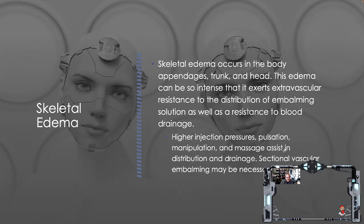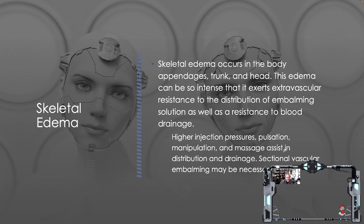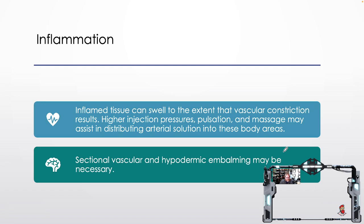Skeletal edema occurs in the body appendages, trunk, and head. This edema can be so intense that it exerts extravascular resistance to both the distribution of embalming solution and blood drainage. Higher injection pressures, pulsation, manipulation, and massage assist in distribution and drainage; sectional vascular embalming may be necessary. Inflamed tissue can swell to the extent that vascular constriction results. Notice the trend: whenever you have extravascular resistances, you treat them using pulsation, manipulation, massage, and higher pressures — it's the same treatment across all the different conditions.